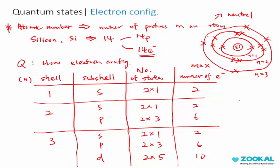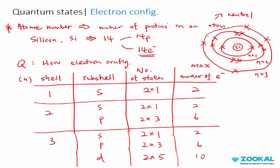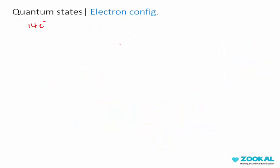This is how we draw it out. But how do we write down the electron configuration? Remember, it has 14 electrons. Let us start writing. In the first shell, n equals to 1, you have 2 states and 1 subshell S, and number of electrons is 2. So we write 1S2. The first shell, subshell S, and 2 electrons.